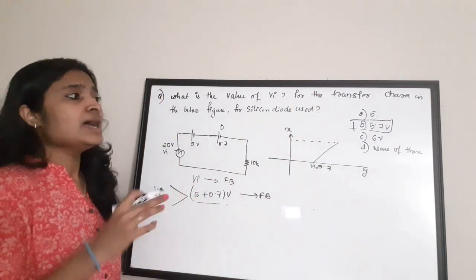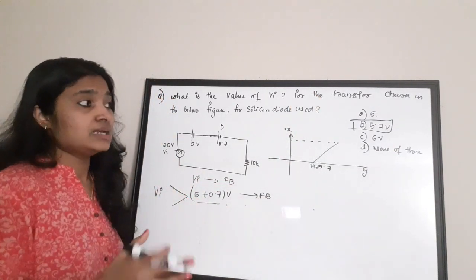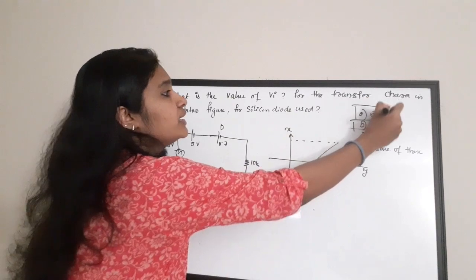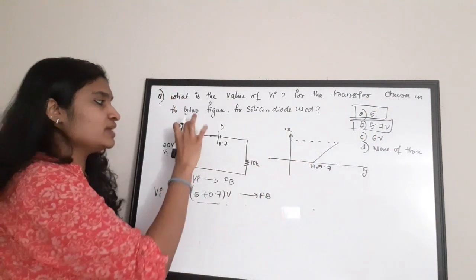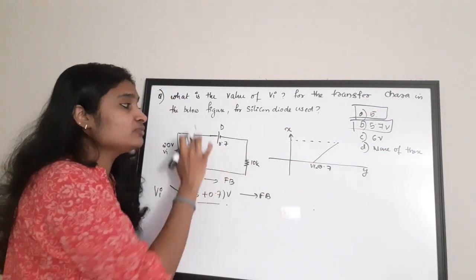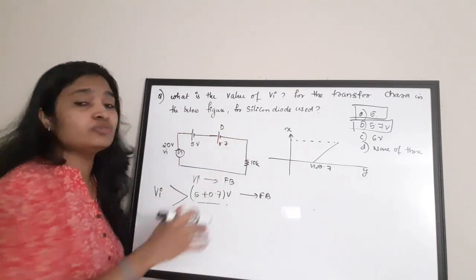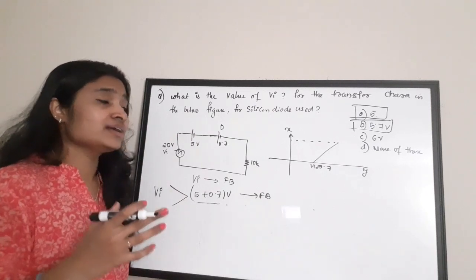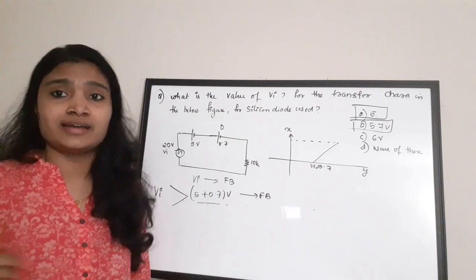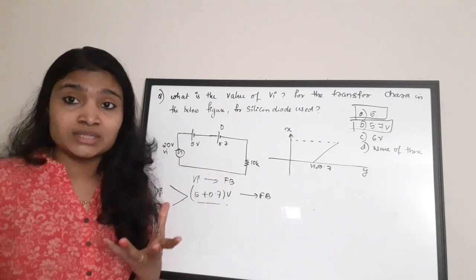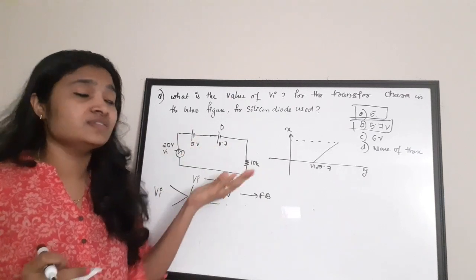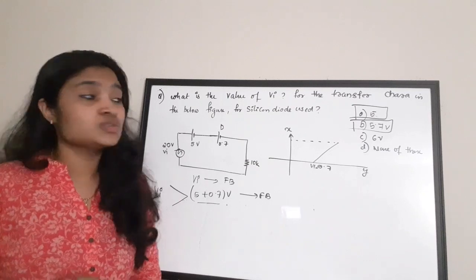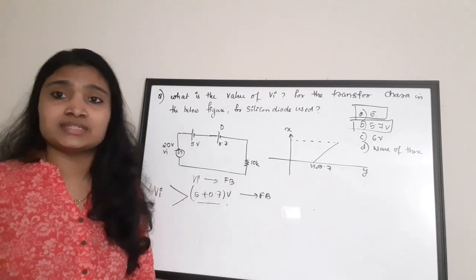The correct answer is option B: 5.7V. If the question had not specified silicon and used an ideal diode, the answer would simply be 5V. But since the built-in potential is considered, we go for 5.7V. Don't get confused — if it is an ideal diode choose 5V, but here for silicon diode choose 5.7V.